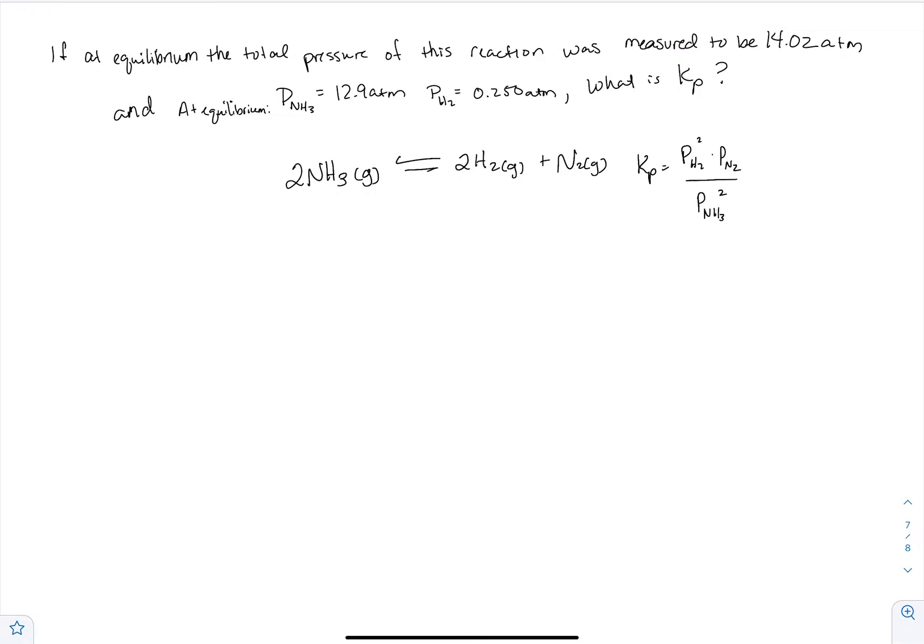I want to have an example of a pressure equilibrium problem. This is one that is given pressure information. Notice it says at equilibrium, the total pressure of the reaction was measured to be this value, and at equilibrium we have this value and this value. What is Kp?